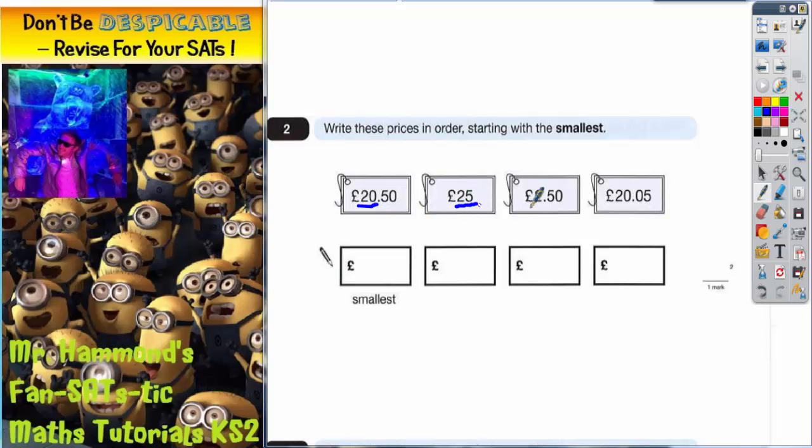Now the smallest of all is the one that starts with just £2, so that has to be the smallest. The largest one of all is the one that starts with £25, so that one's going to go to the other end in the largest box.